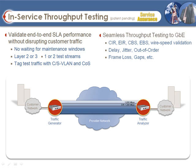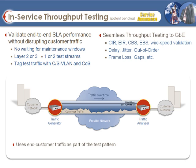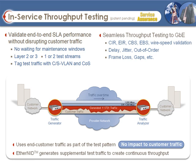The way this functions is that we use the customer's traffic flowing through the device as part of our test traffic for the RFC 2544 testing functionality. We then instantaneously and incrementally add traffic on top of the customer's traffic until the CIR being tested is filled up — essentially filling the pipe 100% — and then analyze at the other end if any packets were dropped from the test stream.